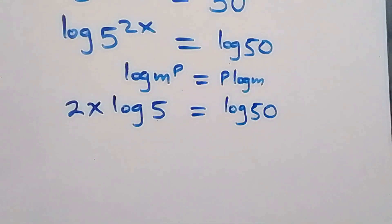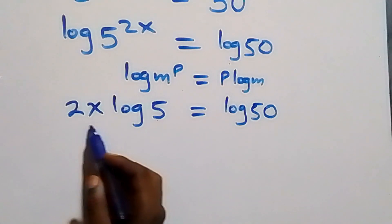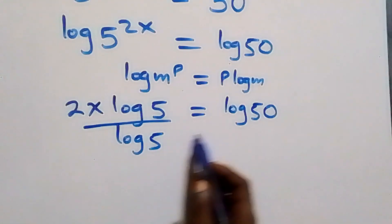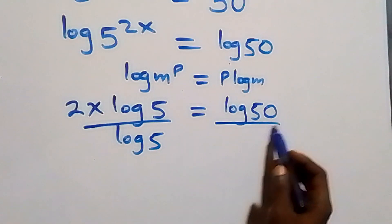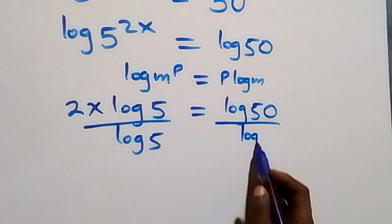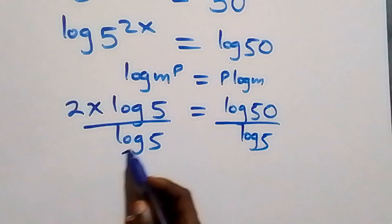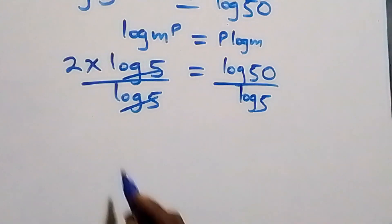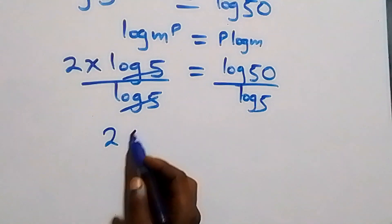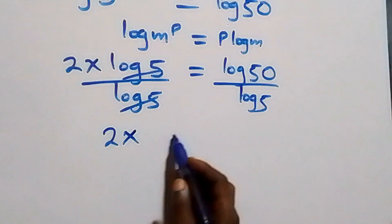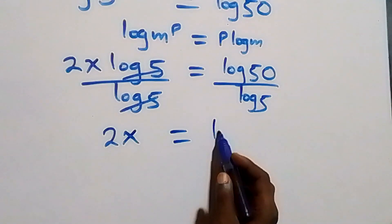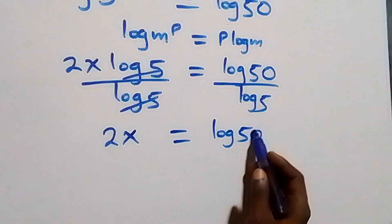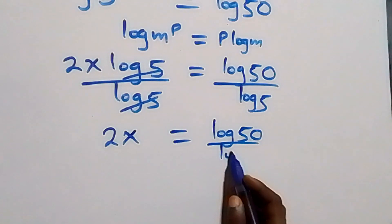From here we divide both sides by log 5. Log 5 cancels on the left side, leaving 2x, which is equal to log 50 over log 5.